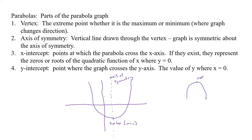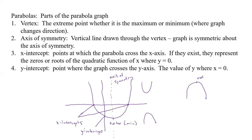Then we have our x-intercepts, and those are going to be the points where the parabola crosses the x-axis. Now if they exist, they represent the zeros or roots of the quadratic function — basically where y equals zero. We've got two in this case. Then we have a y-intercept — that's the point where the graph crosses the y-axis, the value of y where x equals zero. It doesn't always have to have x-intercepts because we could be up here or down here and never touch that x-axis.